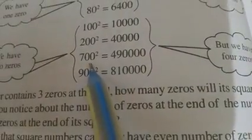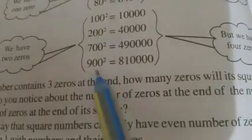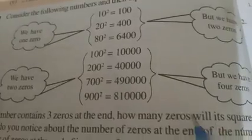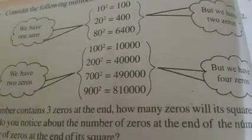Number has 2 zeros, square has 4 zeros. Means in every example, you observe that if number has 1 zero, then square has 2. Number has 2 zeros, then square has 4 zeros. Now, guess if number has 3 zeros at end, then how many zeros will be at its square? Correct. There will be 6 zeros.